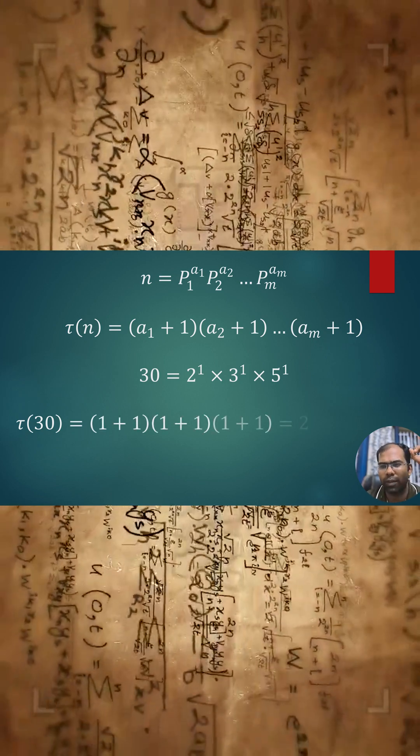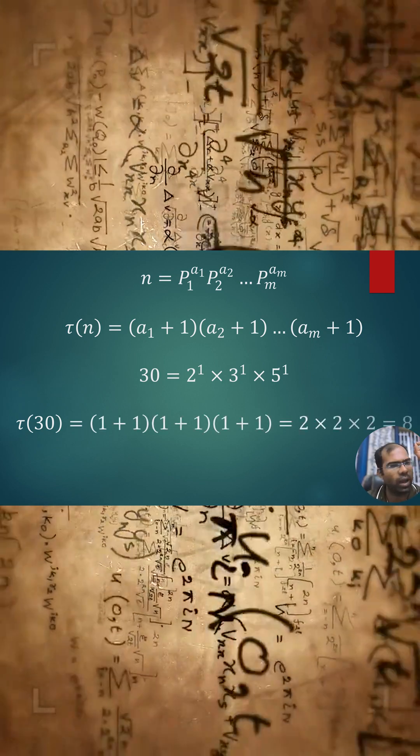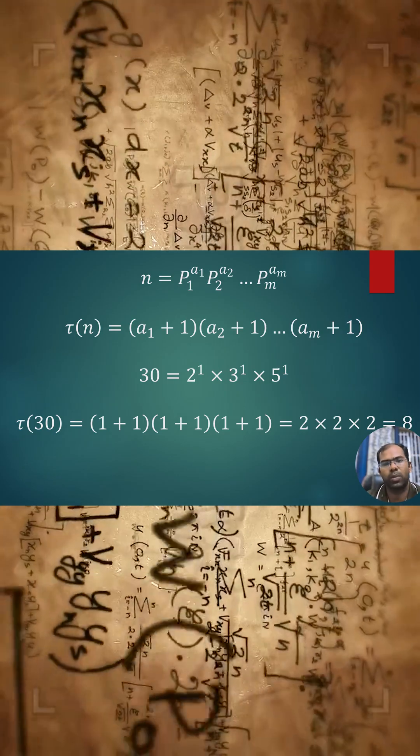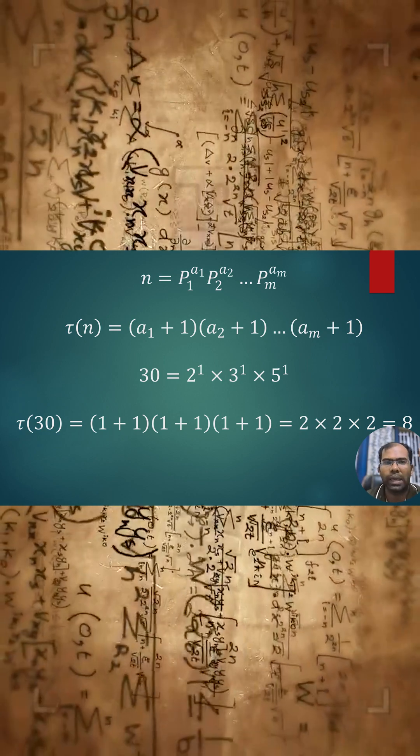For 30, we have 3 prime factors: 2, 3, and 5, each with power of 1. So 1 plus 1 for each gives 2 × 2 × 2, totaling 8.